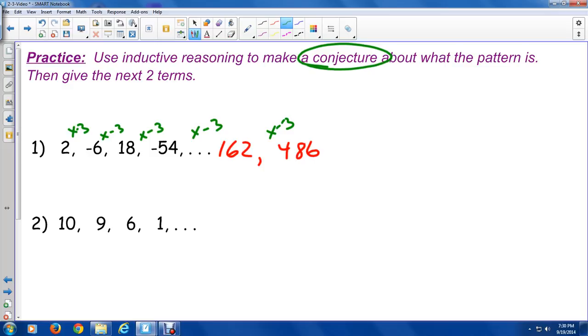So for my conjecture, all I'm going to do is write down in words what I have written with my times negative 3. It appears that we multiply by negative 3. Or we could say multiply by 3 and change the sign is another way of writing that.